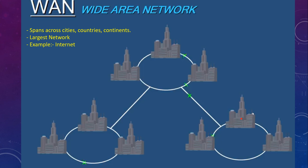Then we have WAN, the Wide Area Network, which spans across cities, countries, and continents. It is the largest network that exists today, and the single best example of a WAN is the internet.